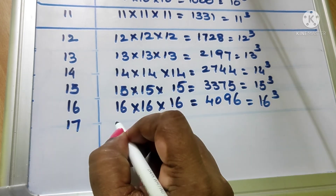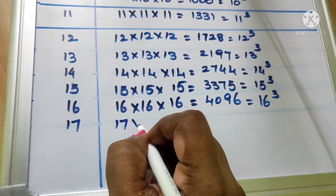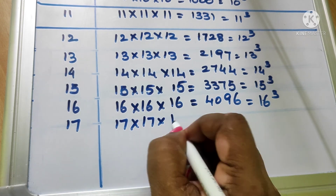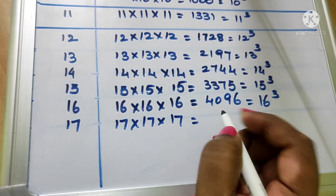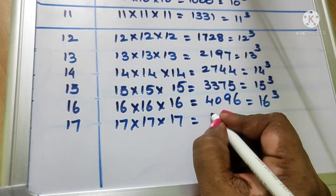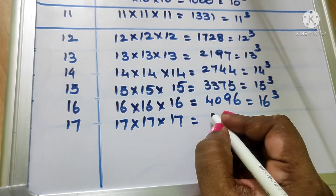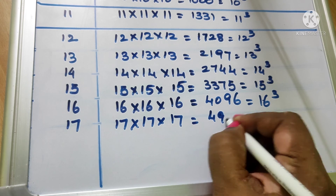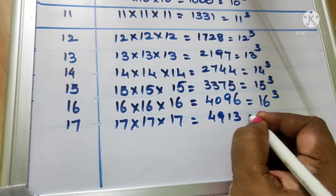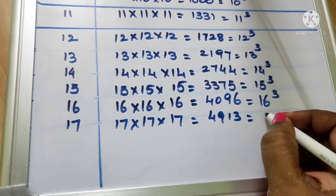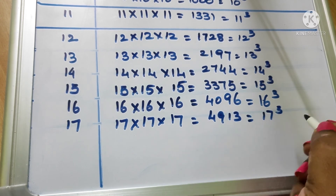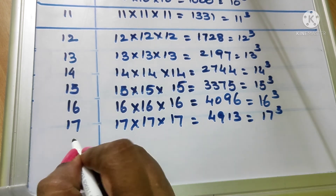17 into 17 into 17 equal to 4913. We write as 17 cube.